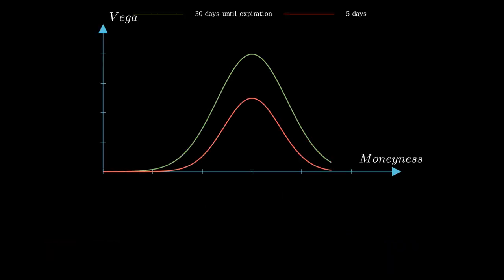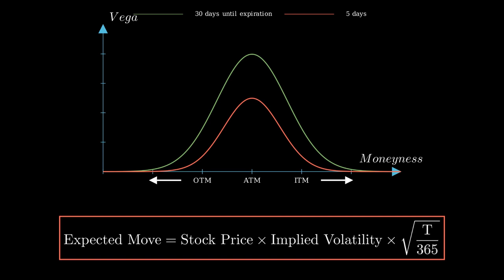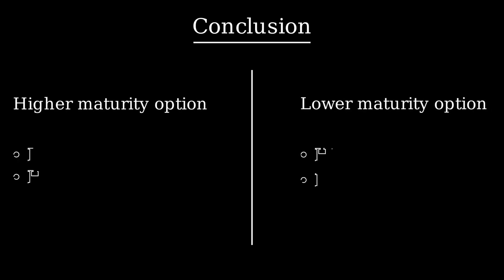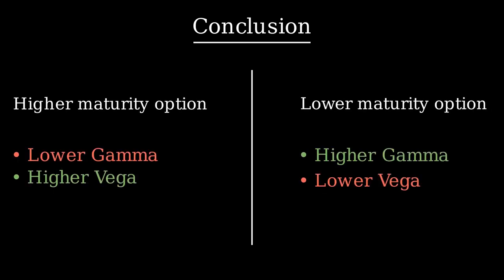Concerning vega, we understand that if the volatility of the underlying rises, the more time it remains before maturity, the higher is the expected move, and therefore the more chances we have to end far in the money. This means that the more time it remains for an option before maturity, the higher is vega. The conclusion is that a higher maturity option has a lower gamma and higher vega, and an option near maturity has higher gamma and lower vega.